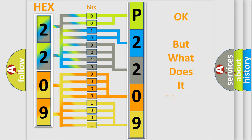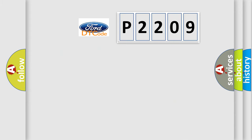A single byte conceals 256 possible combinations. We now know in what way the diagnostic tool translates the received information into a more comprehensible format. The number itself does not make sense to us if we cannot assign information about what it actually expresses. So, what does the diagnostic trouble code P2209 interpret specifically for Infiniti car manufacturers?